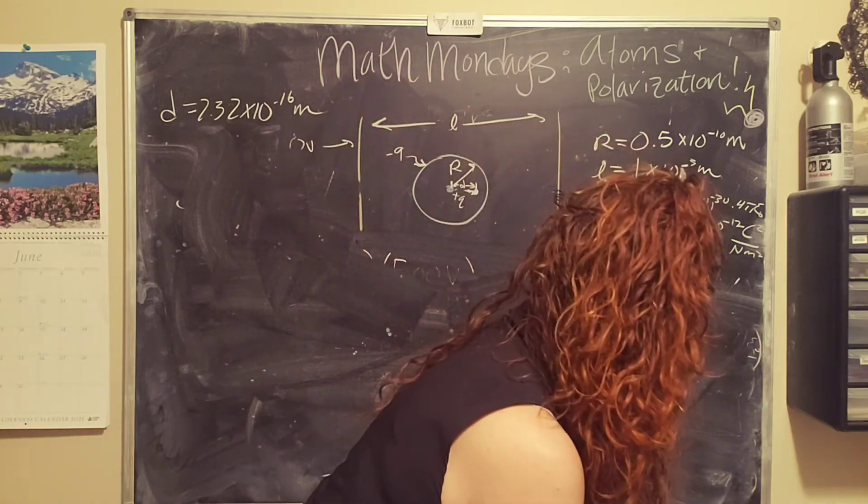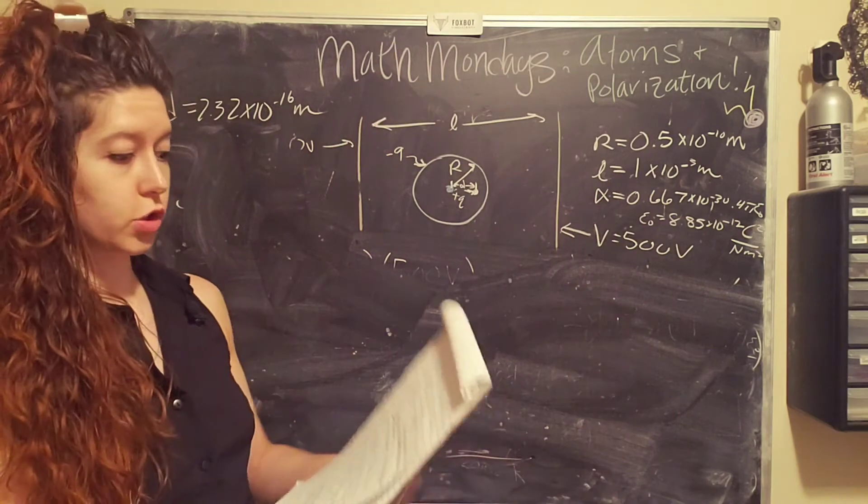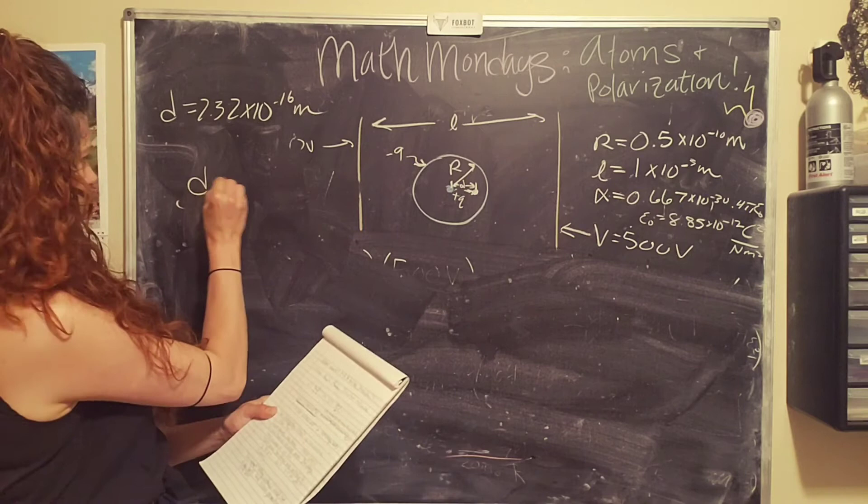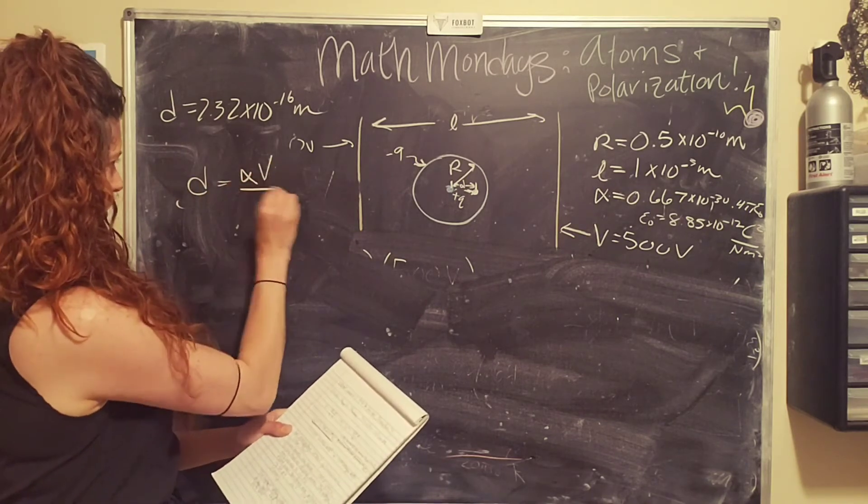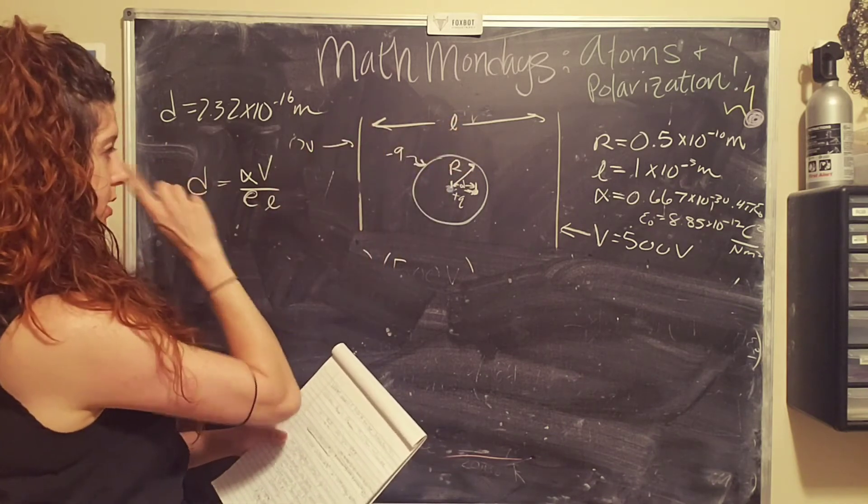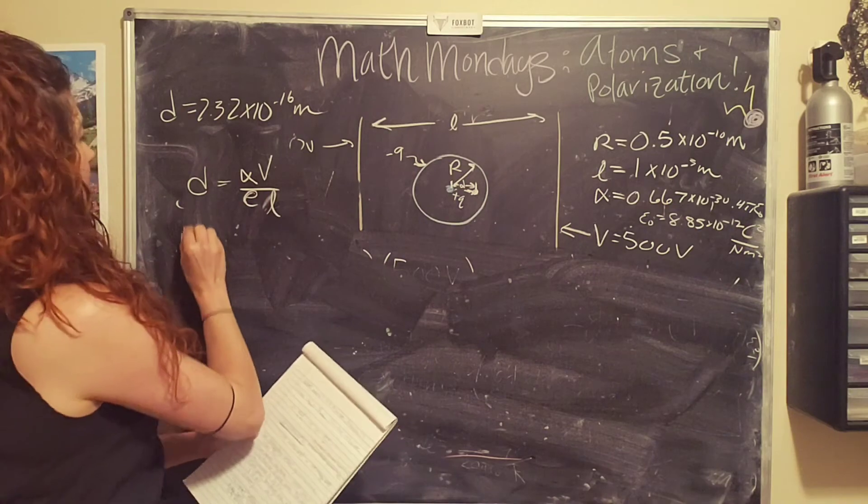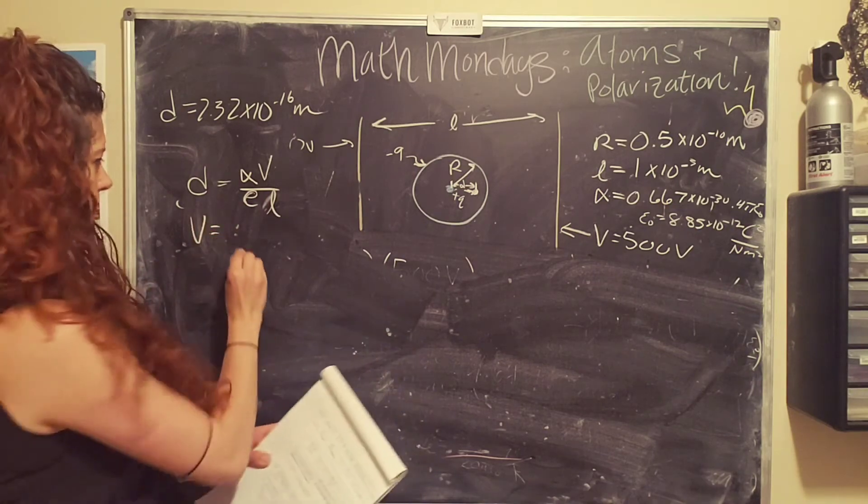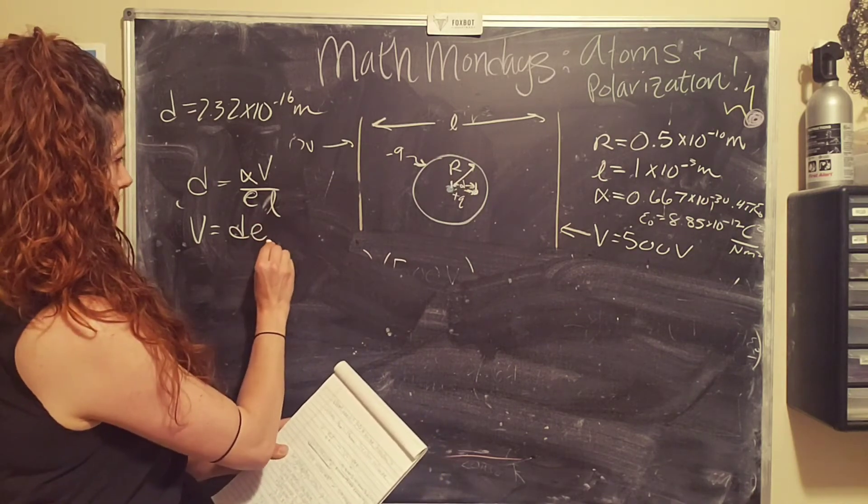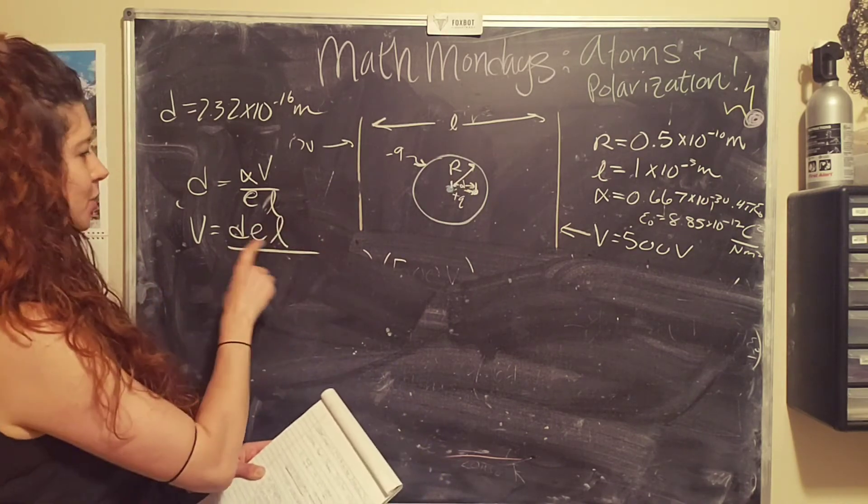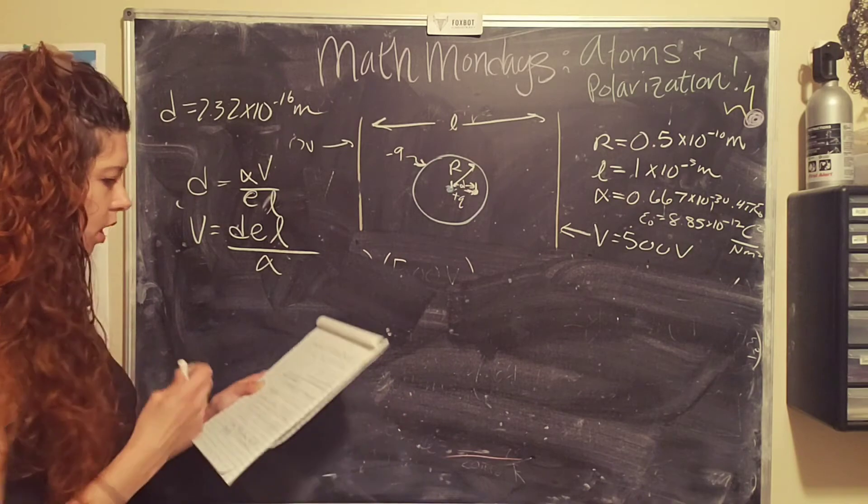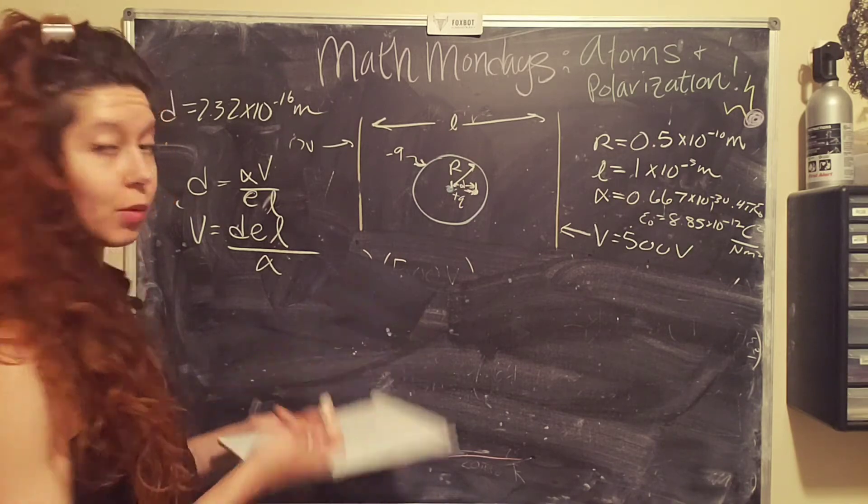And so now what we need is to calculate the voltage. And so we're gonna use the same equation. d equals alpha times the voltage divided by the charge of the electron times the separation distance between the two. And so then we're gonna get the voltage equals the distance that the nucleus moves times the charge of the electron times the separation distance, DEL, divided by alpha.